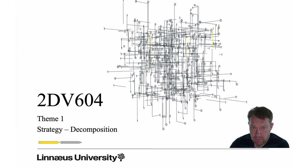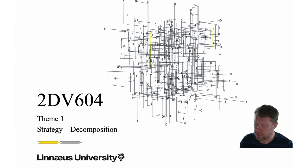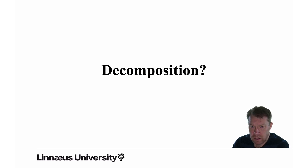Welcome to this lecture in 2DV604 Software Architecture, in theme 1. We're going to talk about one of the most important strategies you use as a software architect: how you manage complexity, size, and scale in your projects. That strategy is decomposition. In this lecture we will try to answer the question of what decomposition is. It's a general mechanism that you can apply in many different settings, on many different problems, and for many different purposes.